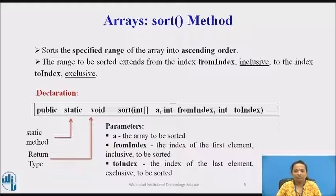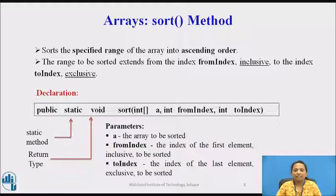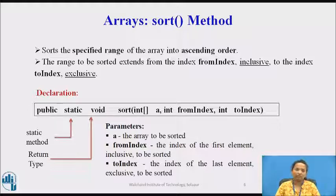There are different forms of the sort method. One form sorts a specified range of the array into ascending order. Only elements within the given range will be sorted. The range extends from a fromIndex (inclusive) up to a toIndex (exclusive). This method is public static with a void return type, and accepts three parameters: the integer array, the index of the first element of the range to be sorted, and the index of the last element — which is excluded from the sorting range.